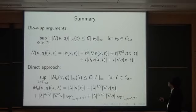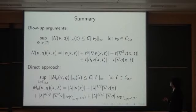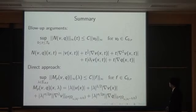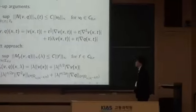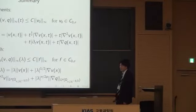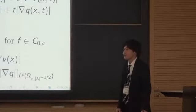To summarize: the blow-up argument gives a stronger a priori estimate, but only yields a positive angle. The direct approach clarifies the angle of the analytic semigroup as pi/2, but we cannot estimate the sup-norm of second derivative terms. Thank you very much for your kind attention.